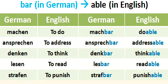To read is 'lesen', and 'readable' is 'lesbar'. To punish is 'strafen', and 'punishable' is 'strafbar'. So whenever you have to make the equivalent of a word with the suffix '-able' in English, you have to replace the '-en' of the corresponding German verb with the suffix '-bar'.